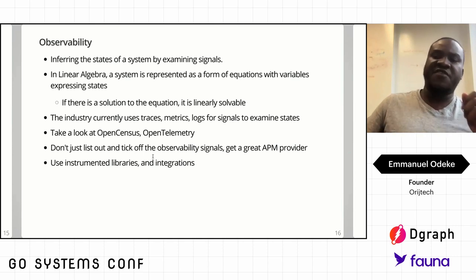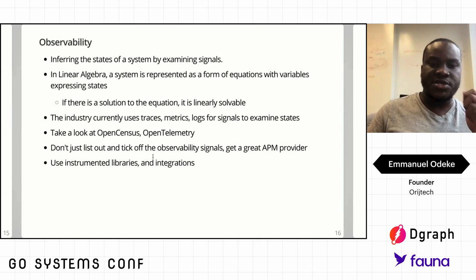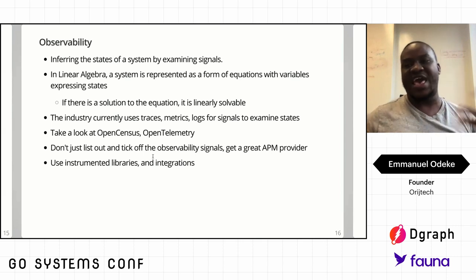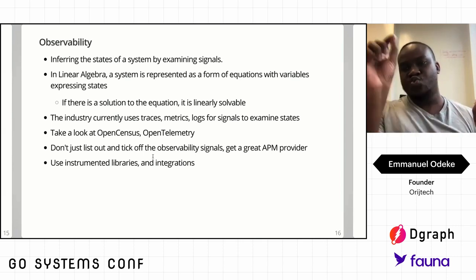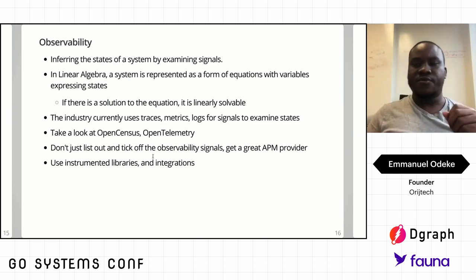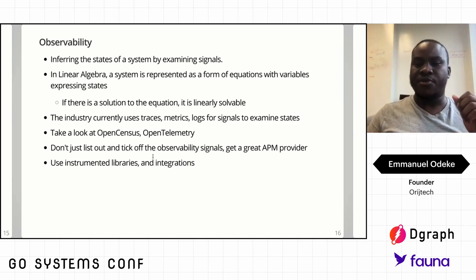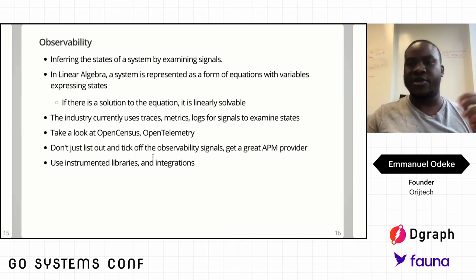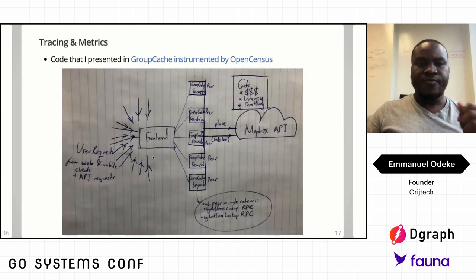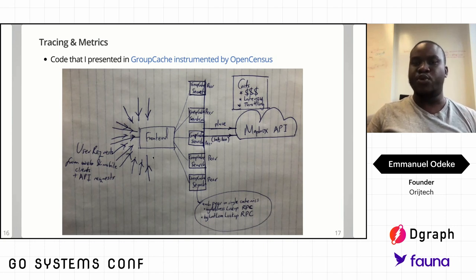Look at OpenCensus and OpenTelemetry. Even after identifying those signals, don't just tick them off and say we have traces, metrics, logs. Actually go find a great APM provider and let them help you out. Most importantly, use instrumented libraries and integrations. This was an excerpt from code that I presented that convinced Manish to care about OpenCensus.